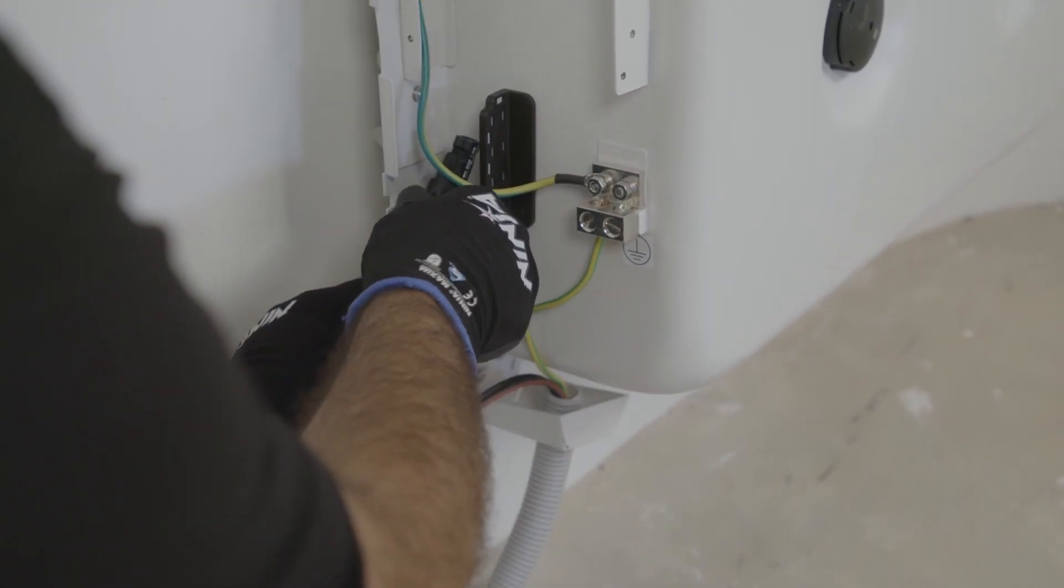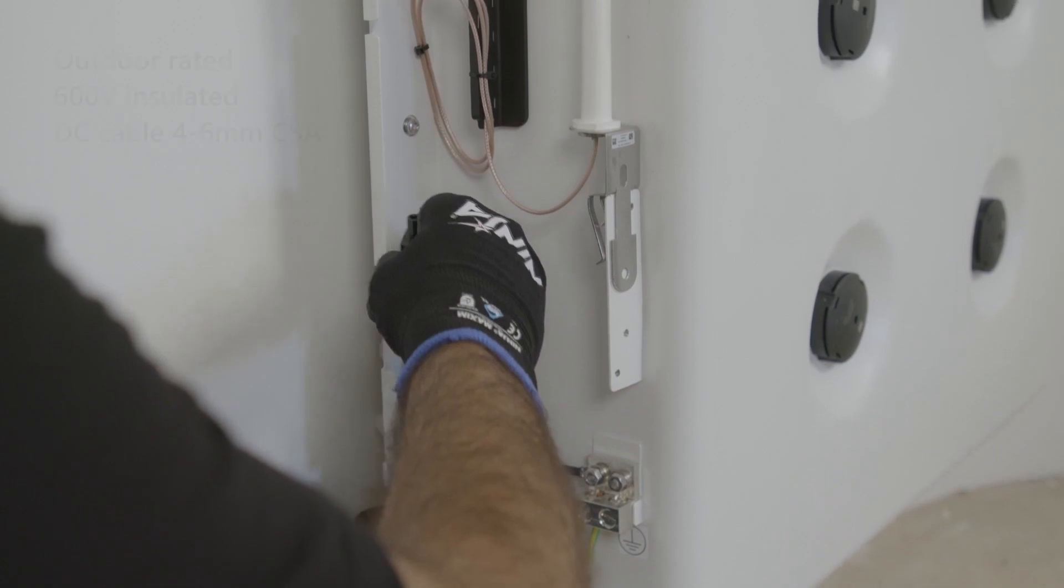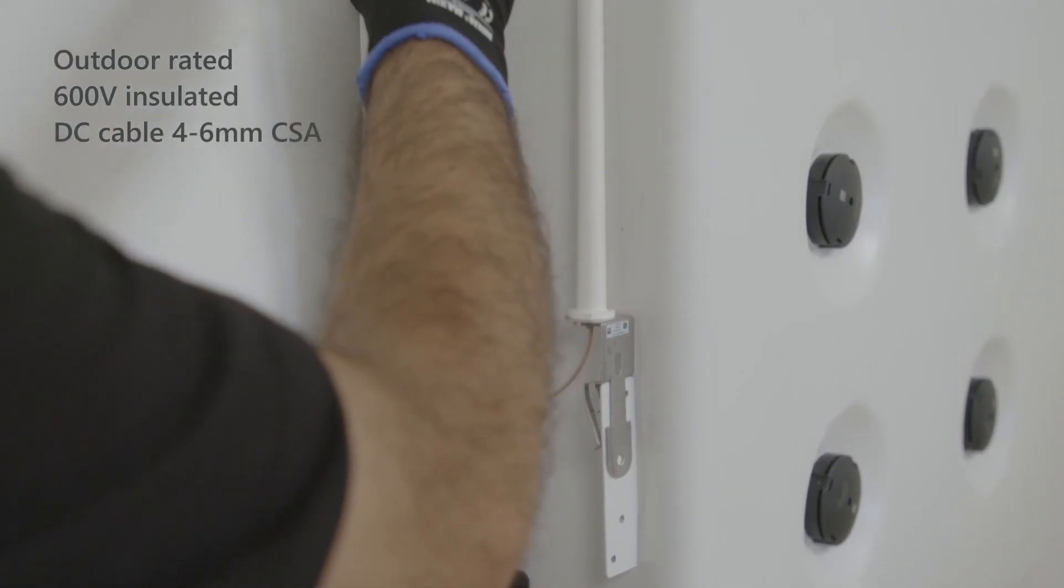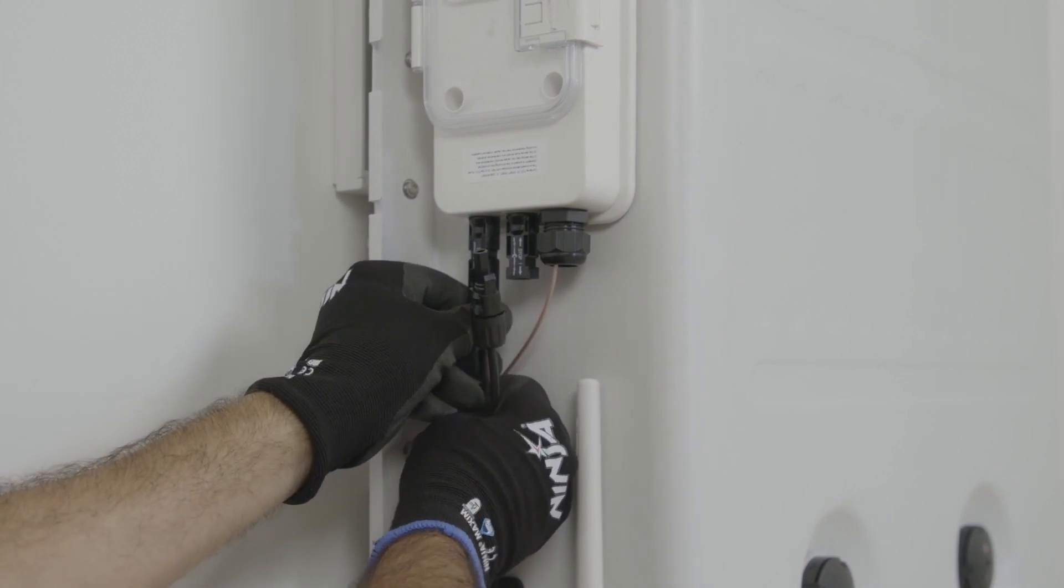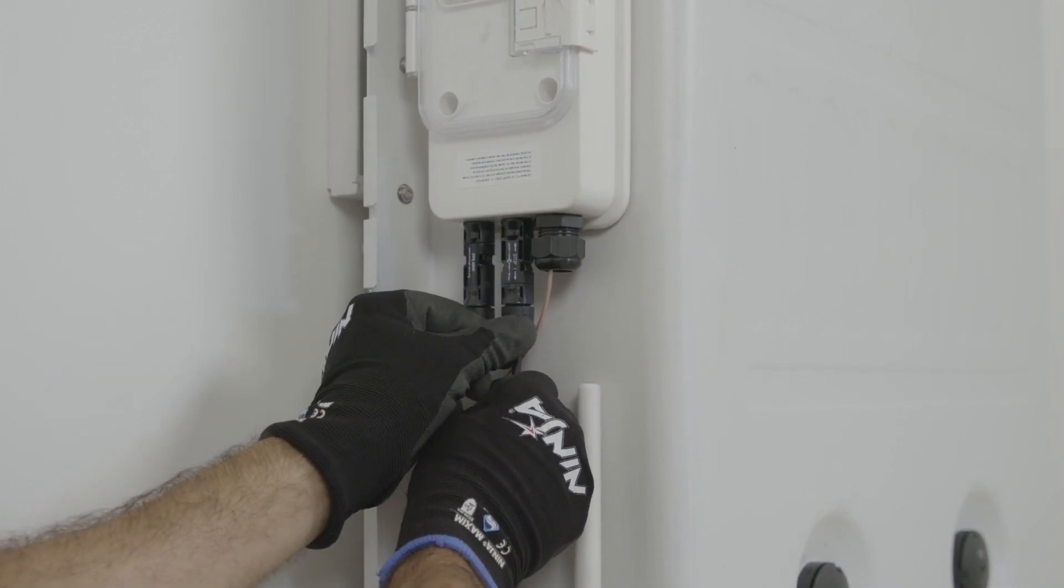Once the earth is in we can then fix the DC. With the battery comes supplied two MC4 connections, so simply connect those to suitable PVDC 600 volt rated cable and connect them into the positive and negative associated terminals.